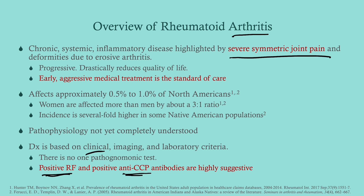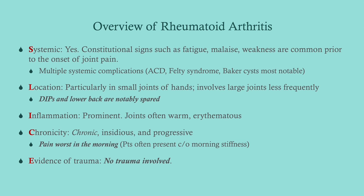A useful mnemonic when evaluating joint pain is SLICE. S is for systemic — is it systemic or not? In RA, yes, patients will have constitutional signs like fatigue, malaise, weakness, and possibly unexplained fever, plus other systemic complications. L is for location — RA typically presents in the wrists and hands, and notably the distal interphalangeal joints and the lower back tend to be spared.